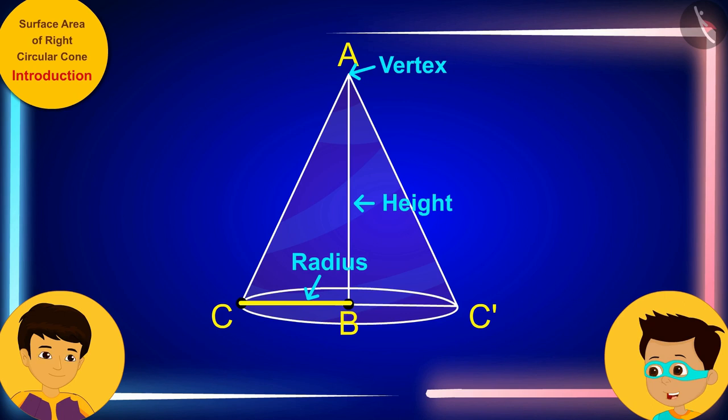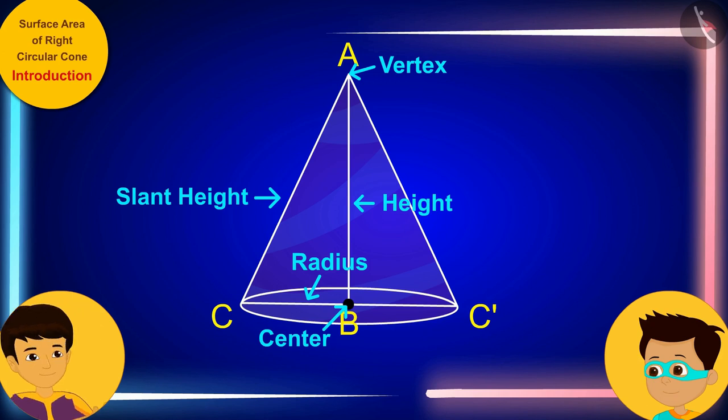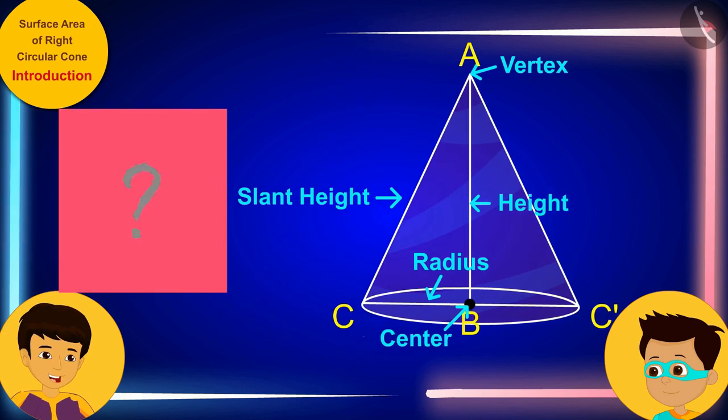And do you know something new? AC is called slant height of this cone. And here, B is the center of the base which is circular in shape. I understood all this. But how does this relate to the paper used in my hats?